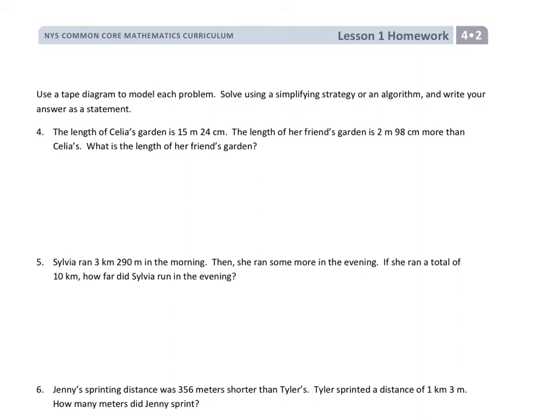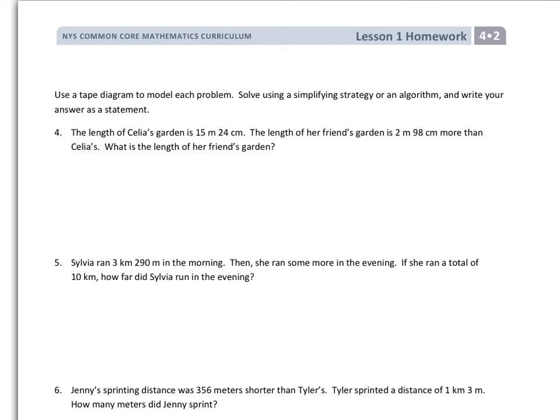On the back, it says they need tape diagrams. So students are going to be doing the same thing. They're just going to be using tape diagrams. I also encourage students to use what's called a visual model, meaning just drawing what they are seeing or thinking. For instance, it says the length of Celia's garden is 15 meters and 24 centimeters. So I'm going to draw her garden, and I'm going to call this 15 meters, 24 centimeters for the length.